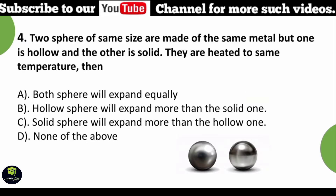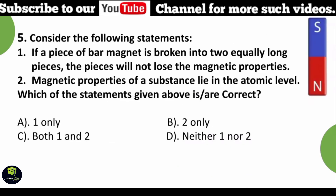Two spheres of the same size are made of the same metal, but one is hollow and the other is solid. They are heated to the same temperature. Answer: Both spheres will expand equally.